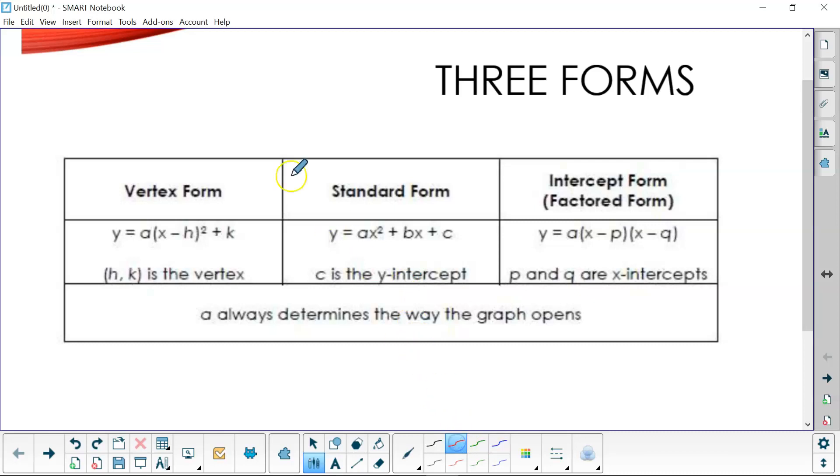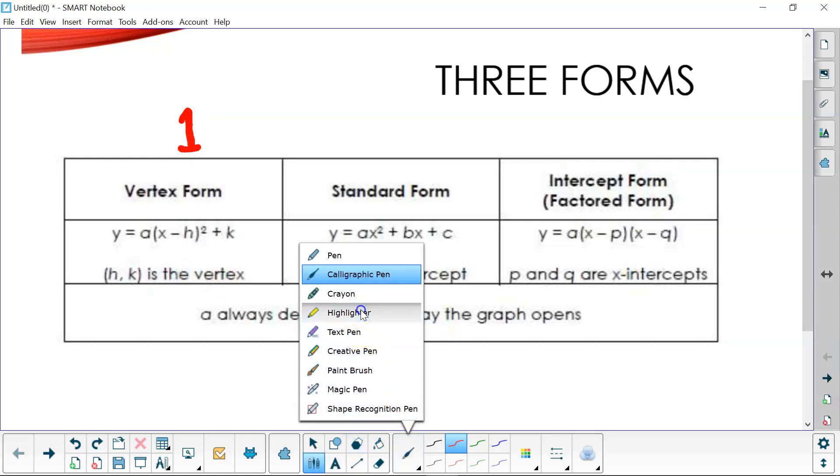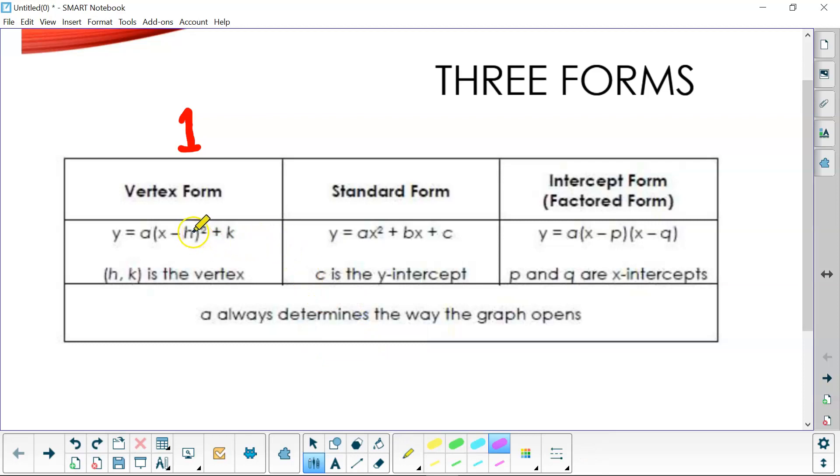Let's first look at form number one, which is the vertex form. It's called the vertex form because you can see the vertex when you have an equation in this form. Your vertex is going to be at (h, k). Your x coordinate for your vertex is at h, your y coordinate for your vertex is at k.